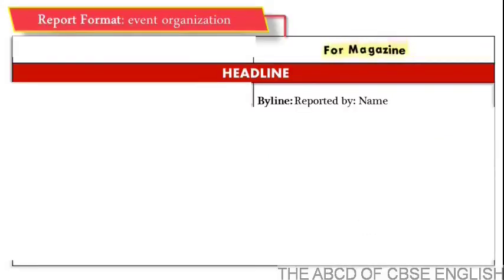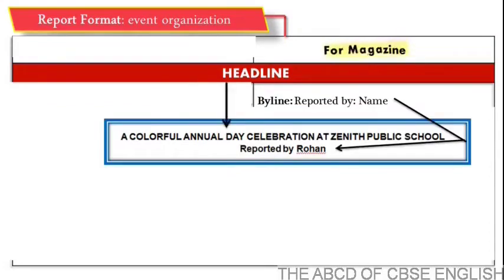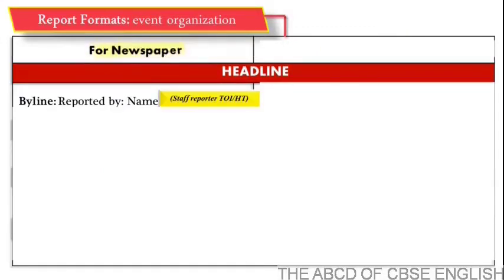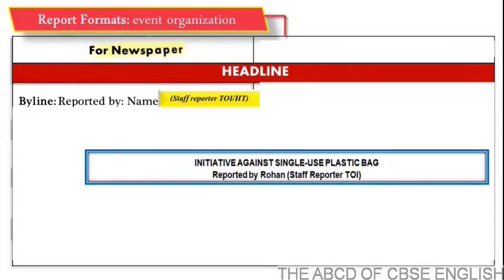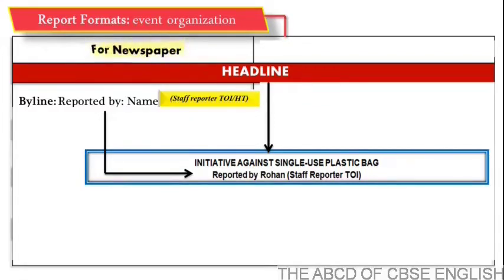When you write a report for a magazine or a newspaper, the first thing is to set a headline. It is advised that you put a catchy headline — for example, 'A Colorful Annual Day Celebration at Zenith Public School.' The second task is to put a byline with the reporter's name, such as 'Reported by Rohan.' For a newspaper report, the byline also includes the name of the newspaper organization in parentheses — for example, 'Reported by Rohan (Staff Reporter, TOI).' TOI stands for Times of India.